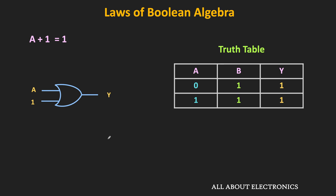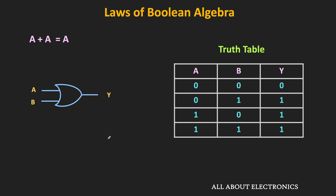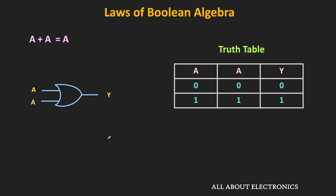The next law is a + a = a, meaning during the OR operation if both inputs are the same, the output is the same as the input — and it is valid for more than two inputs. From the truth table where b also equals a: when a is 0, both inputs are 0 so output y is 0; when a is 1, both inputs are 1 so output y is 1. The output y is the same as input a. This means a + a = a, and a + a + a is also equal to a.